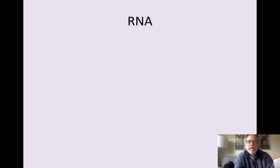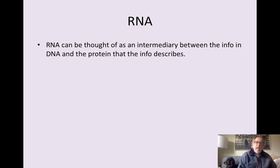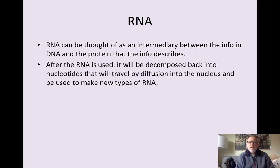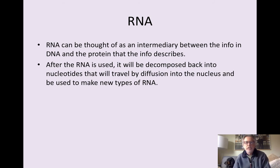Now let's talk for a second about RNA and how it differs from DNA. We can think of RNA as an intermediary between the information contained in DNA and the information contained in proteins. After the RNA is used, after it has been translated, it will be decomposed back into its RNA nucleotides, and they will travel by diffusion back into the nucleus, and it will be used to make new types of RNA.